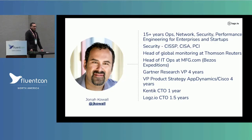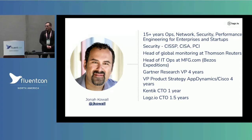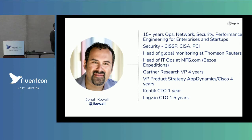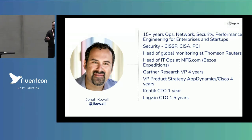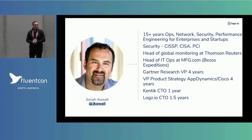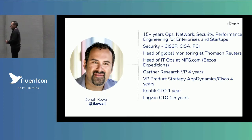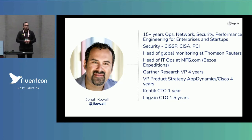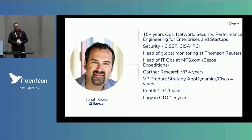My background is more of an operations type person — practitioner for a long time. I've run various types of organizations. I switched in my career and became an analyst at Gartner for a few years covering what's called observability today. Back then it was monitoring IT operations. I'm currently the CTO at Logs.io. We're an open source SaaS company. We build a lot of different technologies for operations and security based on an open source platform.